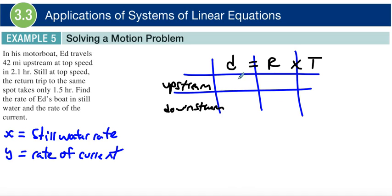So let's see what we do know from here. We'll read this one more time. Ed is traveling 42 miles upstream at top speed in 2.1 hours. So that means I'm just going to put it right here for his time, 2.1 hours. And then I know that on his way back down, he does it in 1.5 hours.